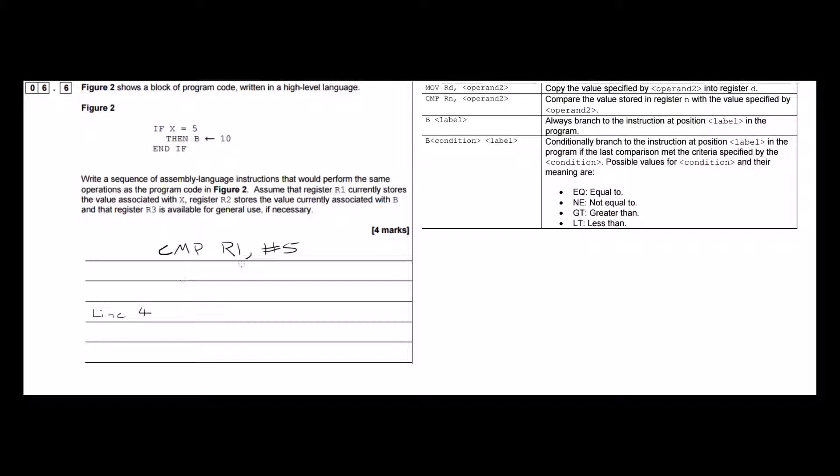So we're going to conditionally branch, so we need to start our command with a B. And then our condition is not equal to, because we want to skip this part of the code if this is not true.